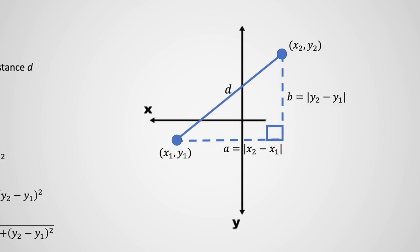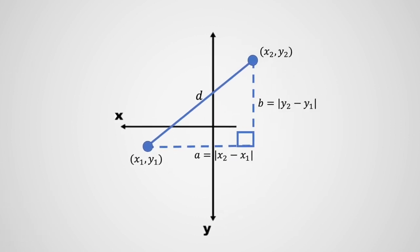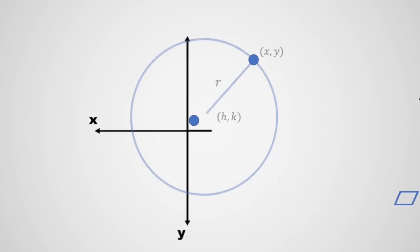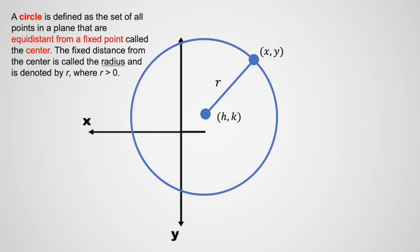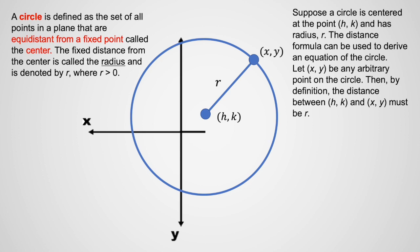Now let's use that idea to find the equation of a circle. From the definition, a circle is defined as the set of all points in a plane that are equidistant from a fixed point called the center. The fixed distance from the center is called the radius and is denoted by r, where r is greater than 0. Suppose a circle is centered at the point h, k and has radius r. The distance formula can be used to derive an equation of the circle.